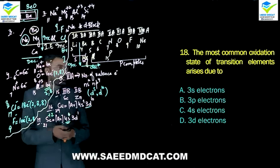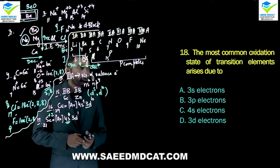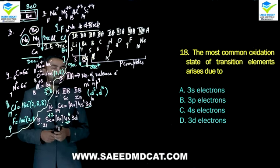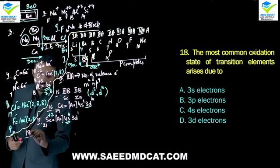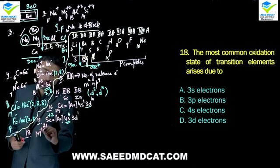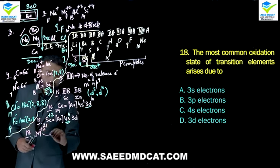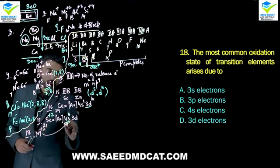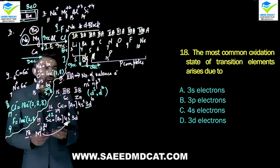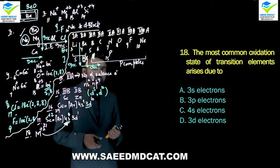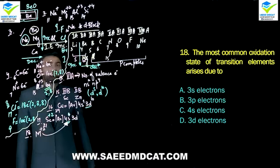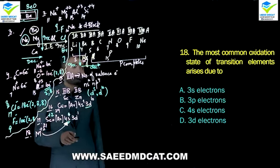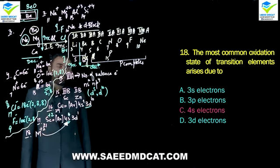Question 18: The most common oxidation state of transition elements arises due to what? The most common oxidation state of transition elements is +2, and it arises from the removal of electrons from 4s. We keep emphasizing this point from question 17: electrons always leave from 4s first. So due to the release of 4s electrons, the most common oxidation state of transition elements is +2. Charlie option.